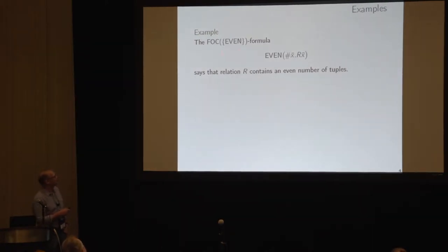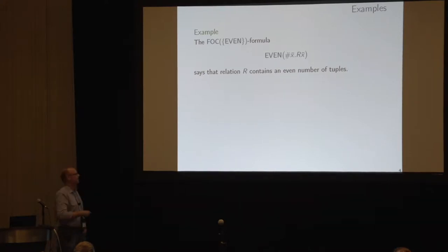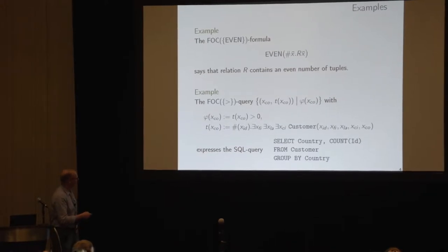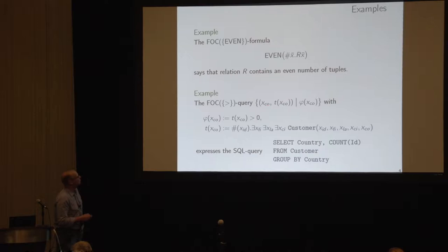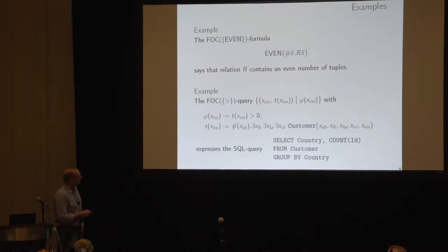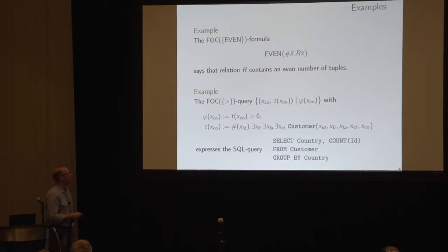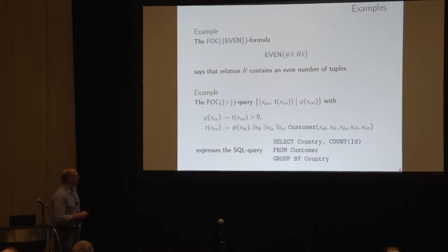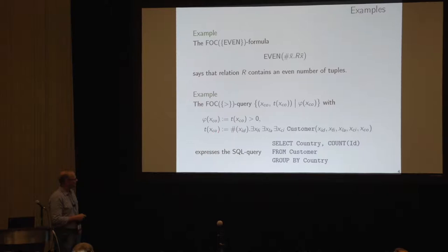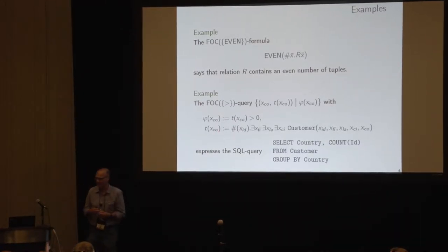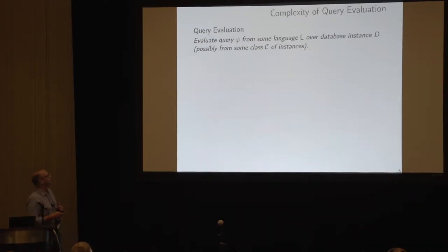For example, the 'even number of tuples' query can now be expressed: we use an even-cardinality predicate and count the number of tuples in a relation. The SQL customer-country example can also be expressed — we write it with two variables, where we have the country variable and a numeric term giving the number of customers. We go over all countries that have at least one customer and count the number of IDs for that country, which is a free value. Things like this we can express in this logic.